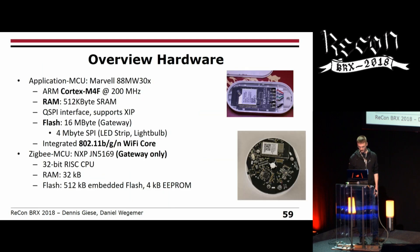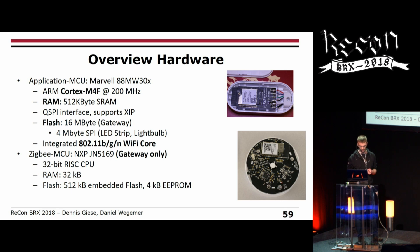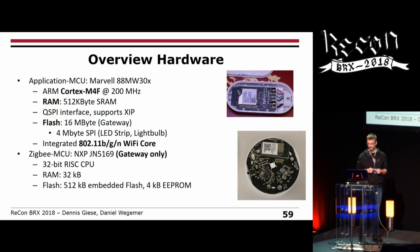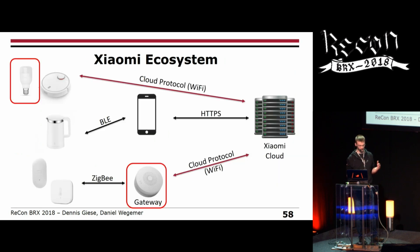What does the hardware look like? For the light bulb, gateway, and LED strips, the application MCU is always the same: an ARM Cortex-M4 with 512 KB of SRAM and either 4 MB or 16 MB of flash, and most importantly an 802.11 BGN Wi-Fi core. Additionally, the gateway also has a ZigBee MCU, because it needs to connect other sensors via ZigBee and then relay them via Wi-Fi to the cloud.